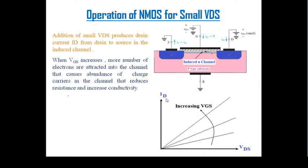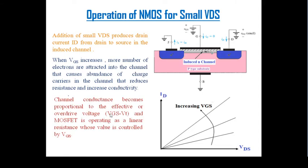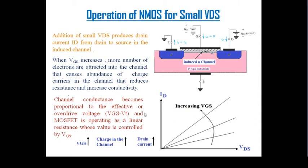If VGS increases, charge in the channel increases, and drain current also increases. Channel conductance becomes proportional to the overdrive voltage VGS minus VT. Even for a small VDS, the drain current is linearly proportional to VDS. This is the linear region of operation. Channel conductance becomes proportional to the effective overdrive voltage VGS minus VT, where VT is the threshold voltage.